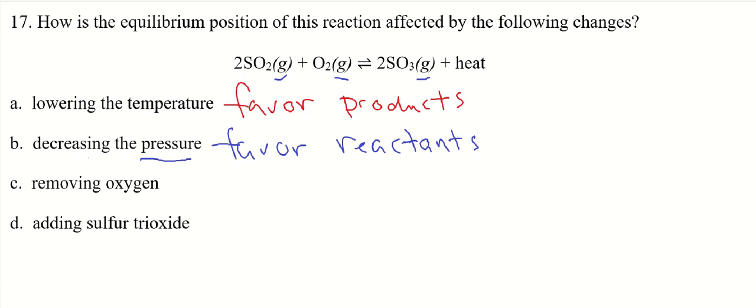All right, so Part C. What happens if we remove the oxygen? So if we decrease the concentration of oxygen, the system will again try to make more oxygen. It will try to undo that stress. So oxygen is a reactant. So more of the sulfur trioxide will decompose to try to make more of the oxygen. So this is also going to favor the reactants.